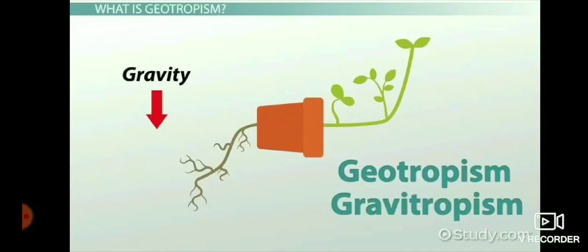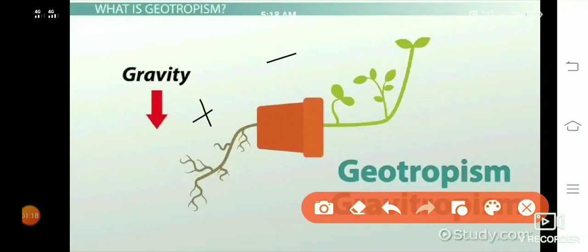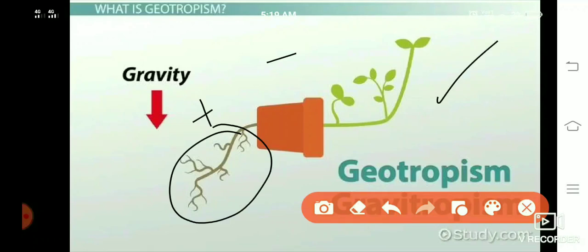Geotropism: any part of the plant that grows towards gravitational pull is called geotropism. When it grows towards gravity, it is positive geotropism; when it grows away from gravity, it is negative geotropism. Looking at the picture, the root grows towards gravity — positive geotropism — while the stem or shoot grows away from gravity — negative geotropism.